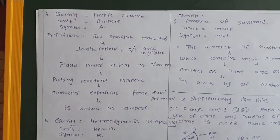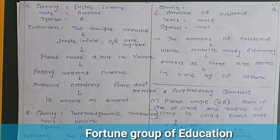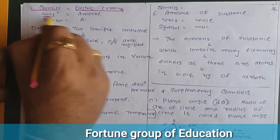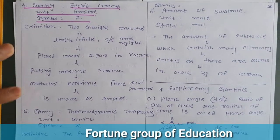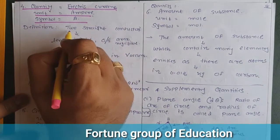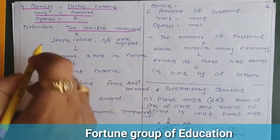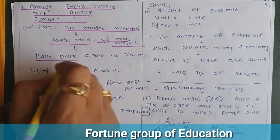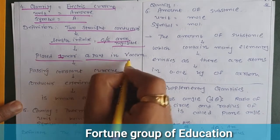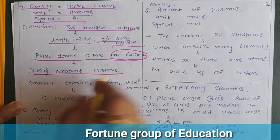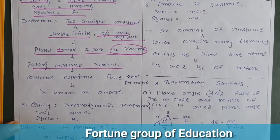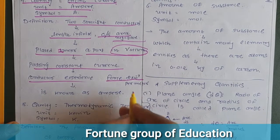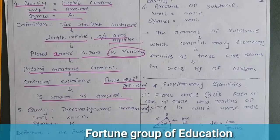The fourth base quantity is electric current. The unit is ampere and the symbol is capital 'A'. For the definition, we take two straight conductors of infinite length and negligible cross-sectional area, placed one meter apart in a vacuum with the same constant current passing through them. The force experienced per meter is 2×10⁻⁷ N/m, and this current is known as one ampere.